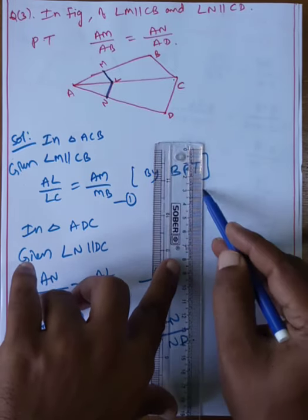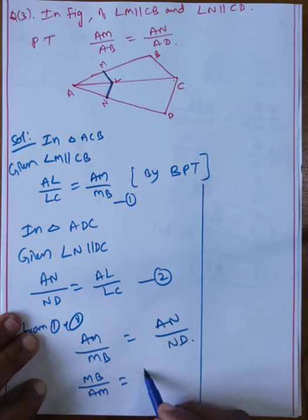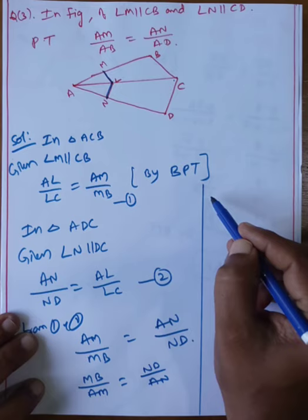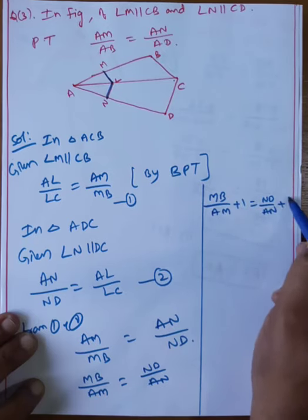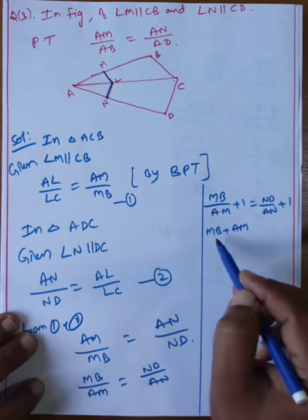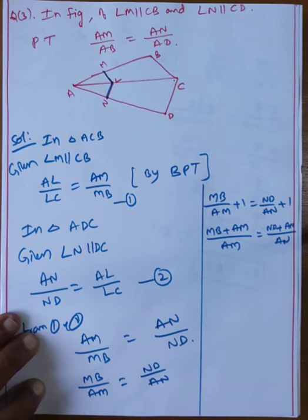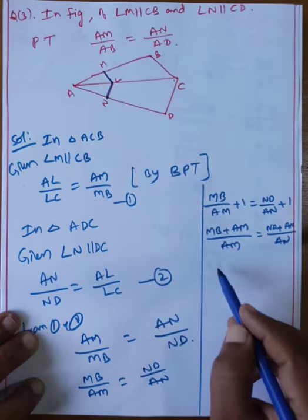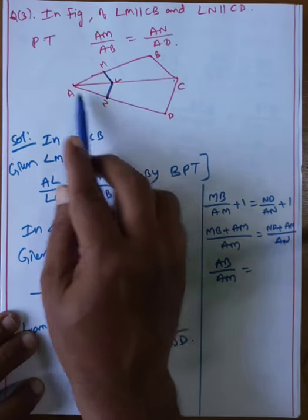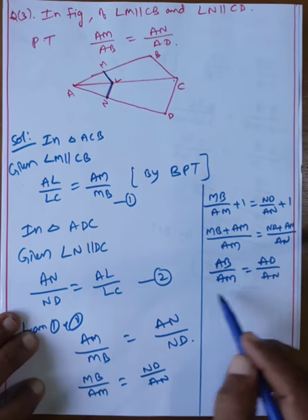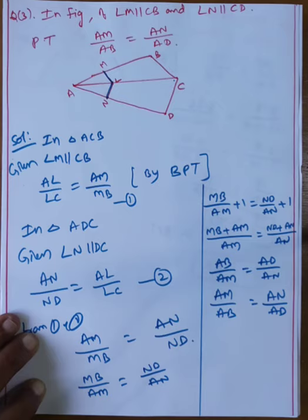Taking the reciprocal: MB by AM equals ND by AN. Adding 1 to both sides: MB plus AM by AM equals ND plus AN by AN. Since MB plus AM equals AB and ND plus AN equals AD, we get AB by AM equals AD by AN. Taking reciprocal gives AM by AB equals AM by AD.